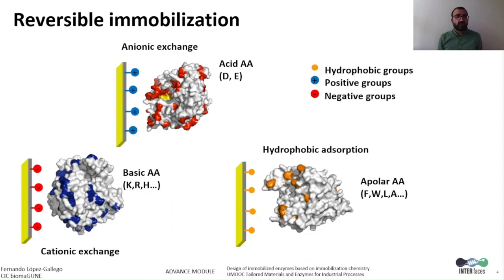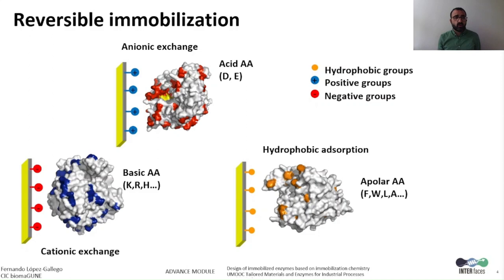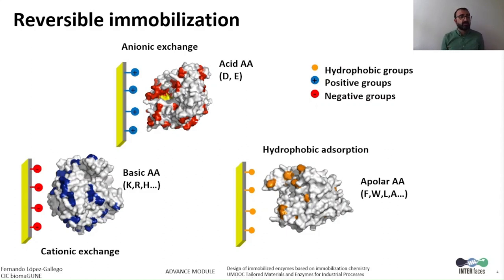So we have three types of reversible immobilization. One is anionic exchange, where the enzyme is bound through negatively charged groups on the surface — aspartic and glutamic. Another is hydrophobic absorption, where hydrophobic residues normally in a hidden pocket can be exposed and interact with the hydrophobic surface of the carrier. These residues are normally phenylalanine, tryptophan, leucine, and alanine. And cationic exchange is the reversible immobilization where basic amino acids are involved — lysine, arginine, or histidines — and the carrier has negative charges, allowing an electrostatic interaction between both.